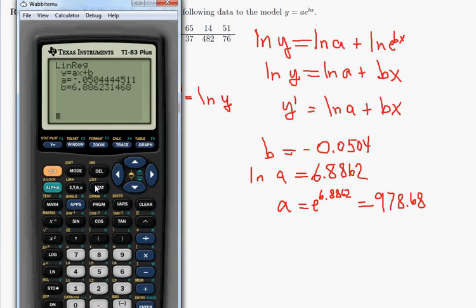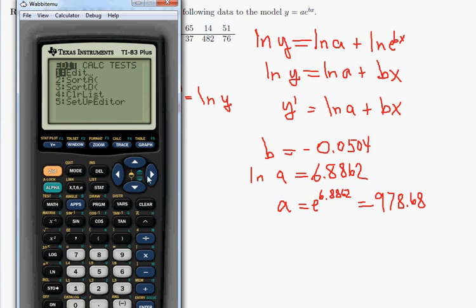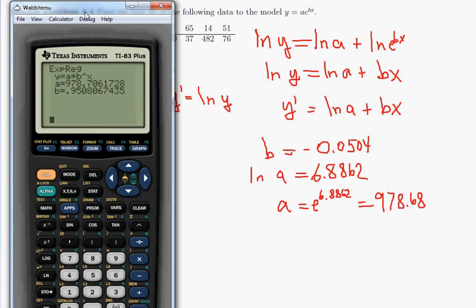So if I go back to the lists, now remember that L3 was the transform, so let me clear that. I don't need that anymore. And let me go back to stat, calc. There are other regression models besides linear. And the one that I would want here is expreg, for exponential regression. And my x-coordinates are in L1. The y-coordinates are in L2. And so hitting Enter, we get our model. 978.706, which I think matched what we had in Excel. And then the b is down here.